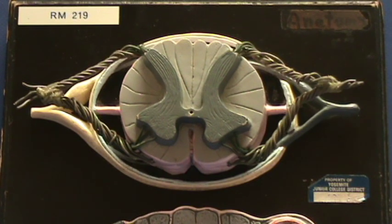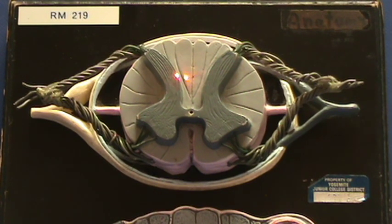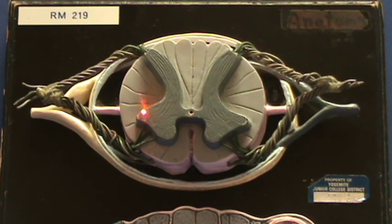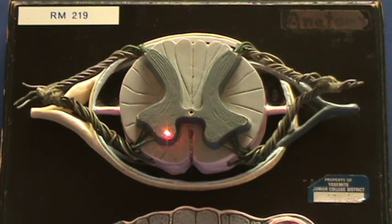Now we are looking at the other part of this model, and we can review some of the things we just spoke about. First of all, right over here you have the gray matter. It is shown in relief in this section. Notice that it has this butterfly shape. Here we have the posterior horns on either side. Right over here is about where you would find the lateral horns, and here would be the anterior horns of the gray matter.